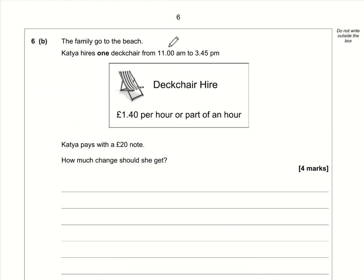Question 6b: The deck chair is hired from 11:00 to 3:45. Counting hours: 11 to 12, 12 to 1, 1 to 2, 2 to 3, and 3 to 3:45, which is charged as 3 to 4. That's 5 hours total.